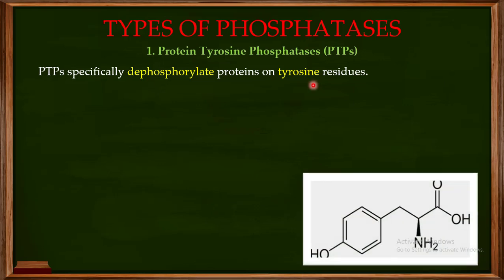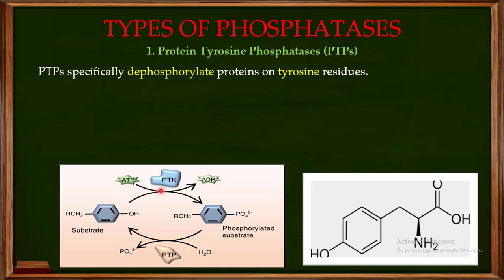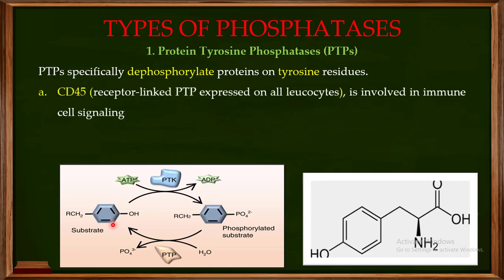Regarding the mechanism: Protein Tyrosine Kinases (PTKs) utilize ATP as a source of the phosphate group and phosphorylate the target protein on the tyrosine amino acid. The PTPs then come and remove this phosphate group, converting the target protein back to its original state, so that the tyrosine residues are back in their dephosphorylated form.